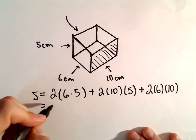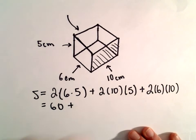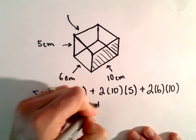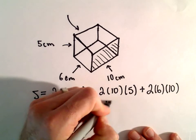Six times five is thirty, times two will be sixty. Let's see, two times ten is twenty, times five is one hundred. Two times six is twelve, times ten will be one twenty.